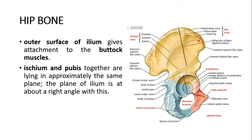The outer surface of the ilium gives attachment to the buttock muscles. It gives rise to the gluteus muscles — gluteus medius, gluteus minimus, etc. The ischium and pubis together lie in approximately the same plane, while the plane of the ilium is at about a right angle to this.